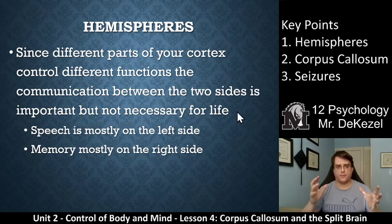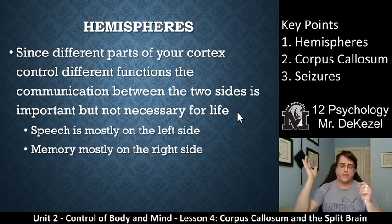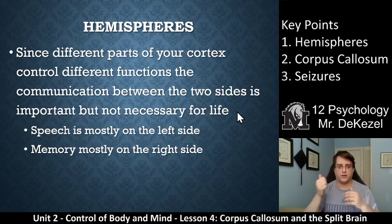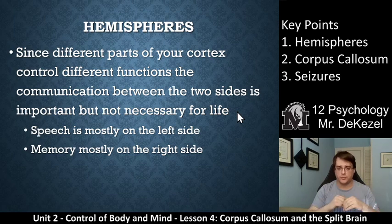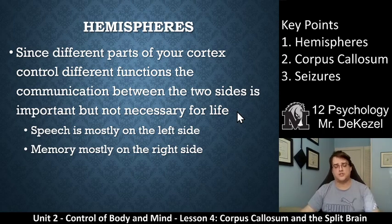The brainstem is the part of your brain that controls the parts most necessary for life. So the corpus callosum doesn't interfere with signals going down through the brainstem to the rest of your body. Cutting it means that information would not be allowed to pass to either side, but the communication between the two sides is important, not necessary for life. For example, speech is on the left side of the brain and memory is on the right side, but that doesn't necessarily mean you can't live if one side can't understand the other.